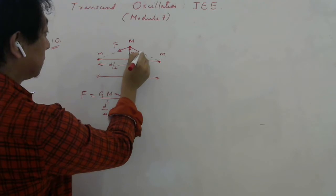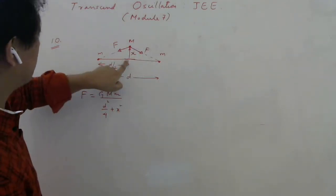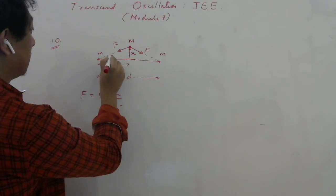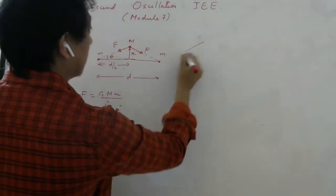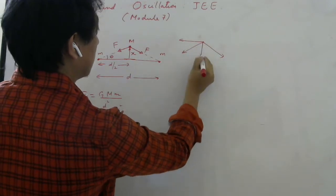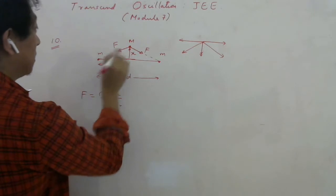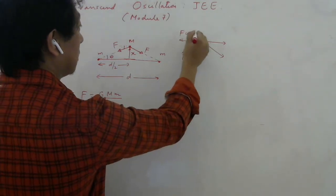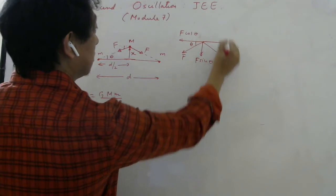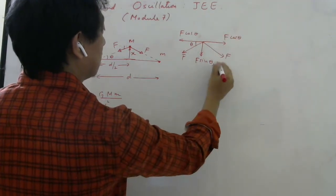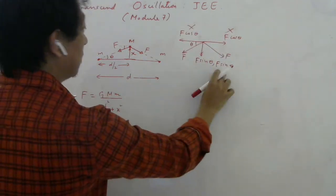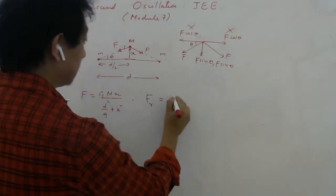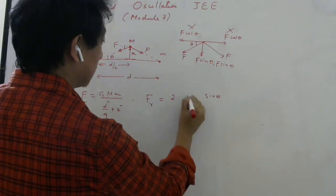We are interested in the force component in the direction of displacement. Let theta be the angle the line joining a fixed mass to M makes with the horizontal. Resolving F into components: the horizontal components (F cos theta) from the two forces cancel, while the vertical components (F sin theta) both point back toward equilibrium and add. So the net restoring force is 2F sin theta.